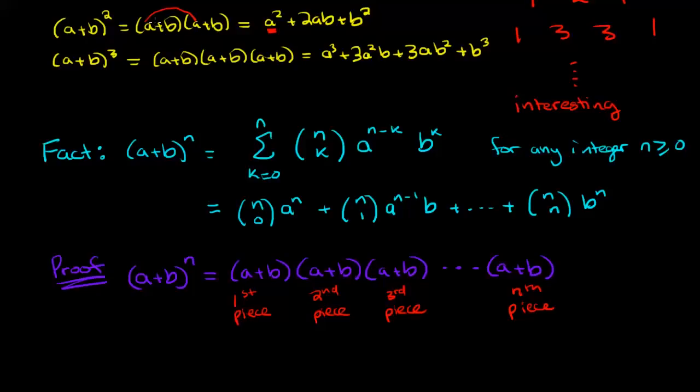The next thing we could do is to multiply this a by this b. So here we would have selected an a and a b and that gives us one of these terms ab, which happens again when we select the b and the a, so that happens again and that gives us this 2 right here. And finally we could have selected the b from the first piece and the b from the second piece and that gives us this term right here.